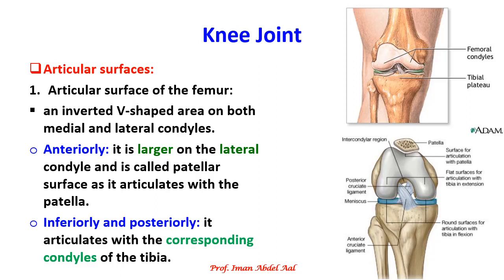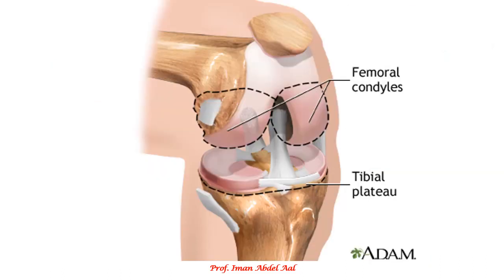Articular surfaces of the knee joint include the articular surface of the femur, the patella, and the tibia. The articular surface of the femur is an inverted V shape, which lies on the medial and lateral condyles. Anteriorly, it is large on the lateral condyle and is called the patellar surface, because it articulates with the patella. Inferiorly and posteriorly, it articulates with the corresponding tibial condyles.